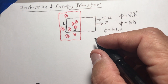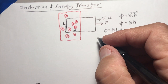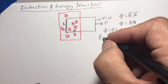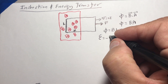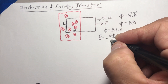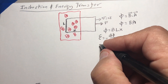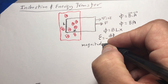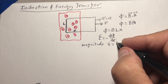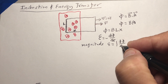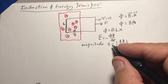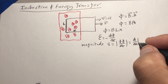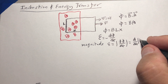Since this problem is about induction, we use Faraday's law: the electromotive force E equals minus dΦ/dt, where Φ is the flux. Using magnitudes, we can write E equals dΦ/dt, which equals d/dt of BA, assuming BA is positive.